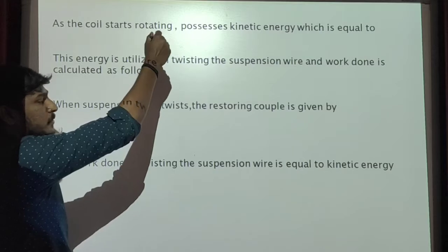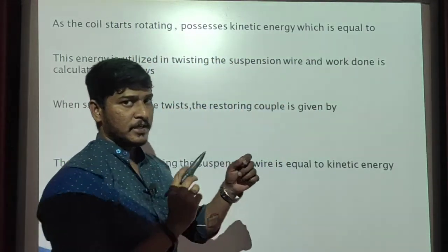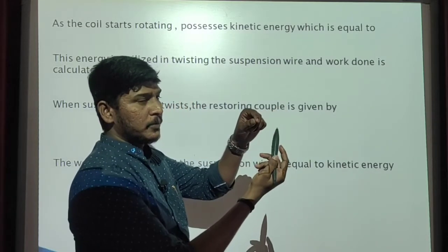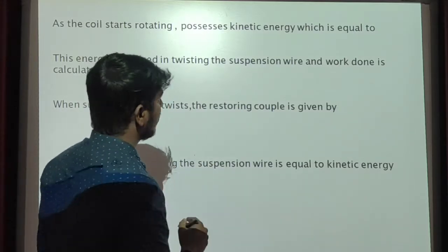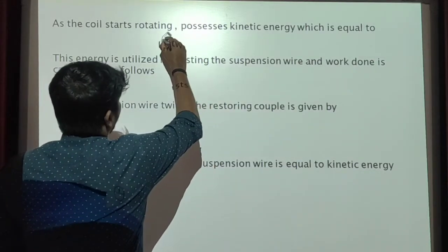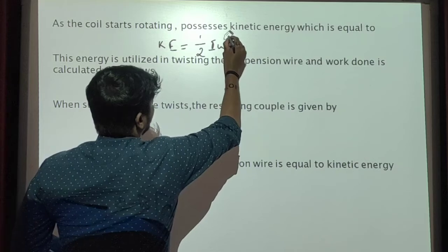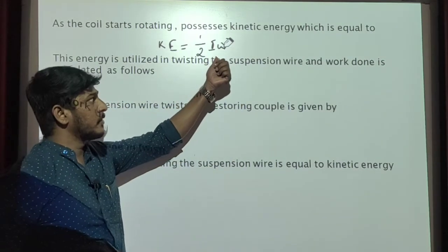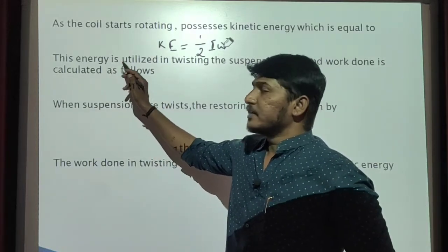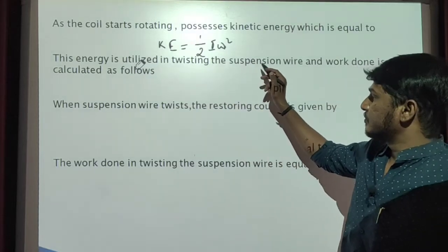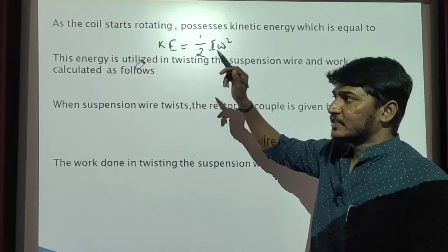As the coil starts rotating, it possesses kinetic energy. When the coil starts to rotate from its initial position due to the torque, it produces some amount of kinetic energy. This kinetic energy is given by: KE equals one-half I omega squared, where I is the moment of inertia and omega is the angular frequency. This energy is utilized in twisting the suspension strip.